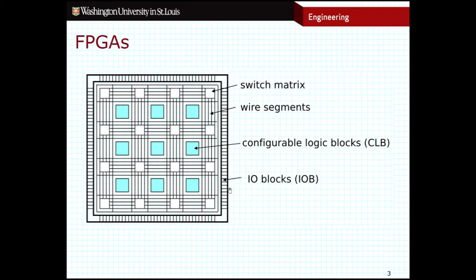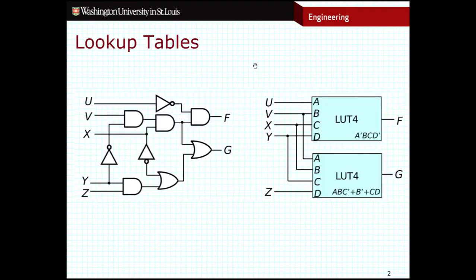And then finally around the edge I have IO, input and output, where I can take my inputs, run them through the configurable logic blocks, and then put them back to the outputs. So between this setup with these configurable logic blocks and these lookup tables, we can construct any circuit that we possibly could want, any possible circuit that we want.